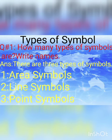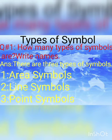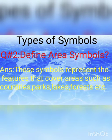Now let's do question answers from this topic. First question: how many types of symbols are there? Write their names. There are three types of symbols: first, area symbols; second, line symbols; and third, point symbols.